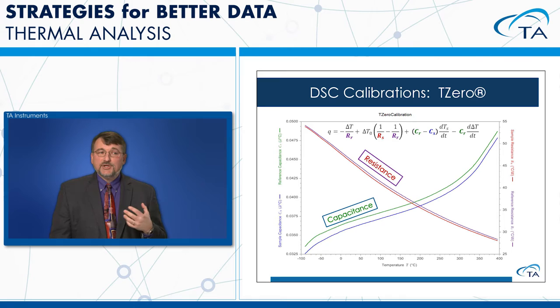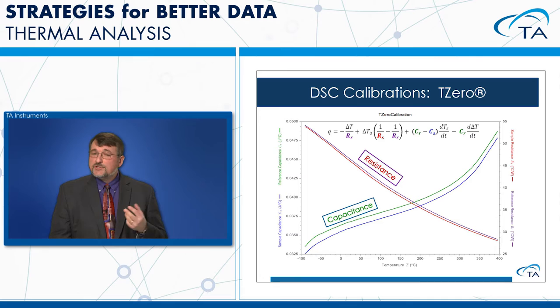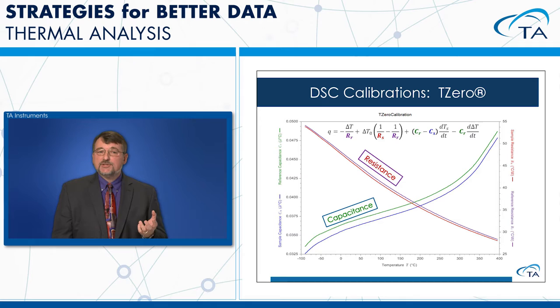When we plot the resistance and capacitance from the T0 calibration, resistance should decrease with increasing temperature and capacitance should increase with increasing temperature. The resistances should be close together, as should the capacitances, but they don't have to be exactly the same — we're now measuring what they are rather than assuming. The key thing is that we don't see any transitions or peaks; the curves should go up or down smoothly.